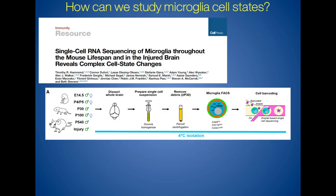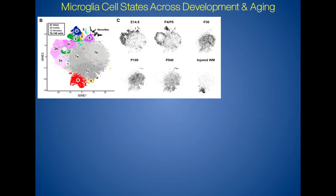This was the approach taken in a paper published earlier this year, led by Tim Hammond, a former postdoc in the lab. This study examined the development of microglia from early embryonic time points into adulthood, as well as aging, and what happens to microglia during the aging process — all done in a mouse. We also examined what happened during a model of white matter injury. This is a schematic of the protocol and the ages of the mice that we profiled.